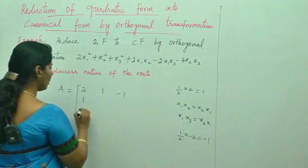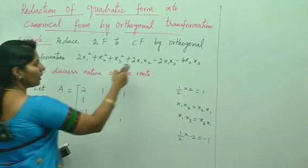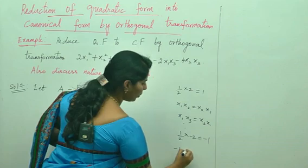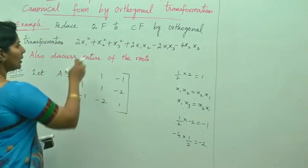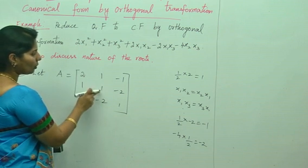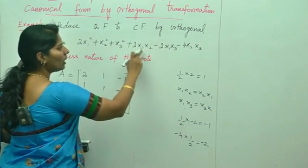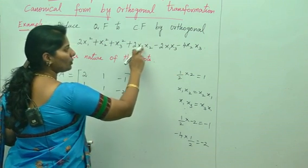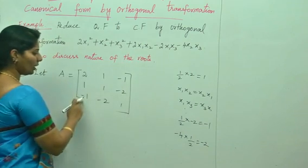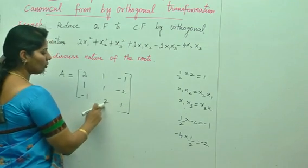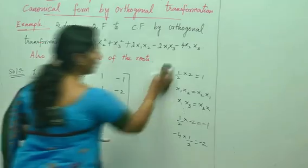The diagonal elements are 2, 1, 1. For the x2x3 term, one-half times minus 4 gives minus 2, so minus 2 in both symmetric positions. To summarize: diagonal elements are the coefficients of x1 squared, x2 squared, x3 squared. Off-diagonal elements are one-half times the coefficient of the corresponding cross term placed symmetrically. This is the corresponding matrix A for this expression. Now we need to find the eigenvalues and eigenvectors.